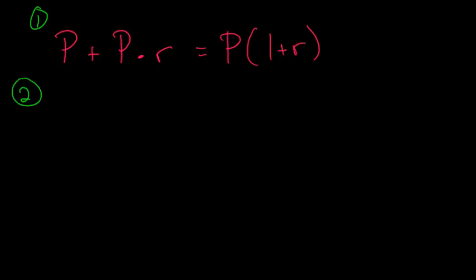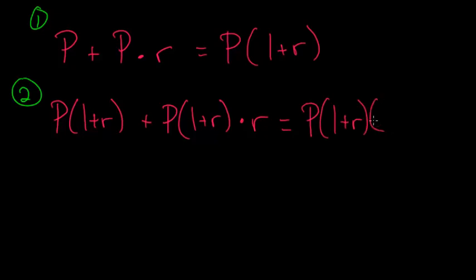And for the second period, we'll now consider this P times 1 plus R as the new principal. So we start with P times 1 plus R, and we add to it this new principal, P times 1 plus R, multiplied by the rate. And I can factor out this P times 1 plus R, and for this term when I factor it out I'm left with a 1, and for this term when I factor it out I'm left with plus R. And we can simplify this to P times 1 plus R squared.